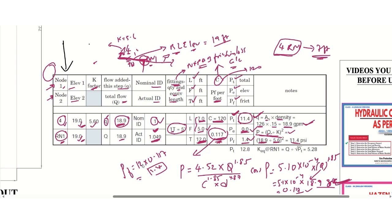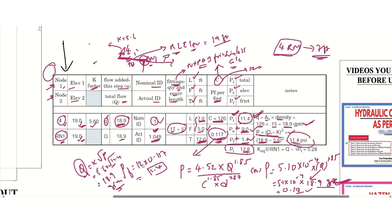Adding the initial total pressure of 11.4 psi, the elevation head of zero, and friction losses of 1.4 psi, we get a total pressure of 12.8 psi. To cross-verify: using q = k√p with k = 5.6 and p = 11.4 psi, we get 5.6 × √11.4 = 18.9 gpm — which confirms our sprinkler flow.